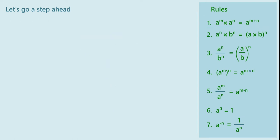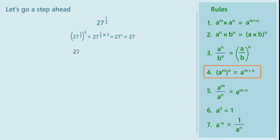Similarly, to give meaning to 27 raised to 1 upon 3, let us write 27 raised to 1 upon 3, whole raised to 3, as 27 raised to 1 upon 3 into 3, which is equal to 27 raised to 1, or 27. Hence, 27 raised to 1 upon 3 is a number whose cube is 27, which is 3 into 3 into 3, or 3 cubed. Hence 27 raised to 1 upon 3 is the cube root of 27, which equals 3.